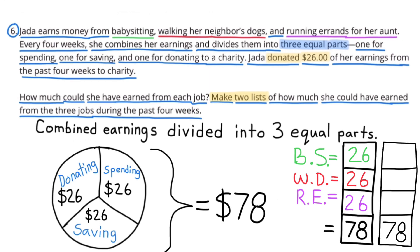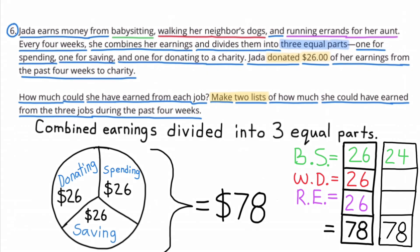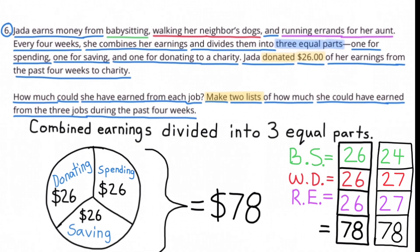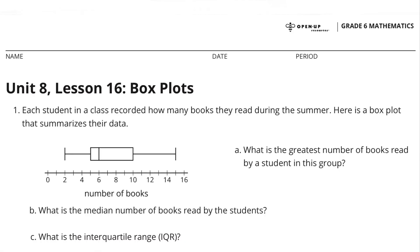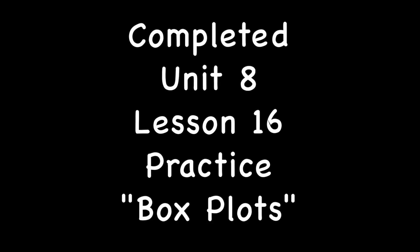My second list also has to total $78, and I've decided just to take a couple dollars off of babysitting and add those dollars to walking the dog and running errands. That was an easy way to get a second list, and it still totals $78. Congratulations, you've completed Unit 8, Lesson 16: Box Plots.